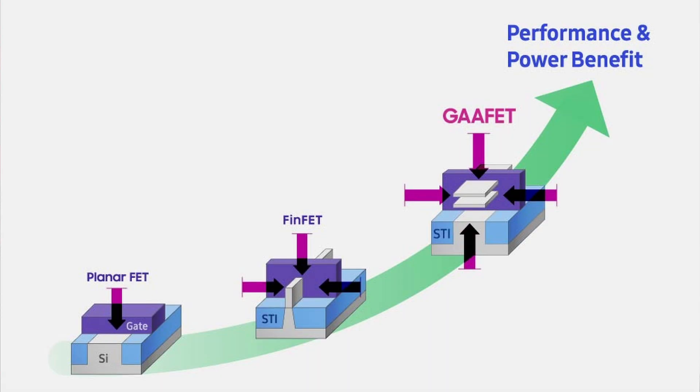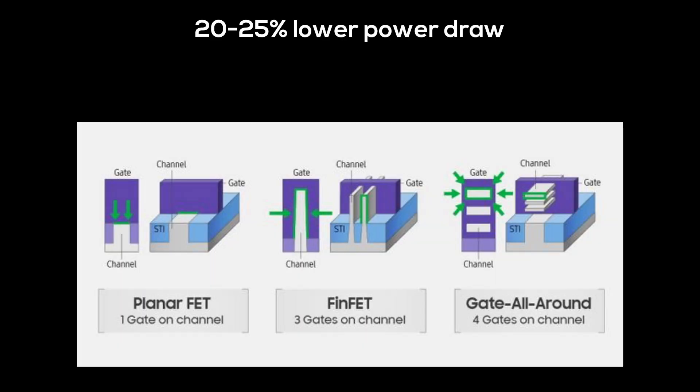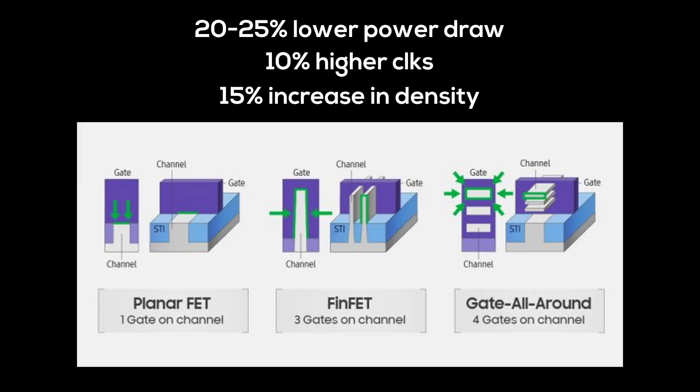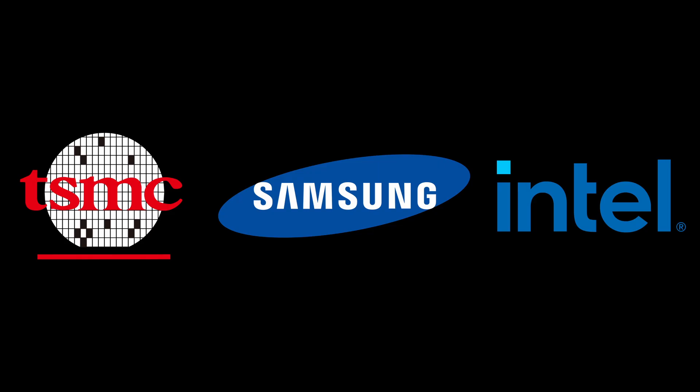With a perfectly fitting sponsor like that, I don't really need a segue. But GAA does need real-world process nodes and products to show the benefits of a gate with more control over the channel. The benefits are supposed to be around 20–25% lower power draw, 10% higher clock speeds, and up to a 15% increase in transistor density. The exciting part is that all three leading foundries — TSMC, Samsung and Intel — either already have GAA process nodes ready or are very close.